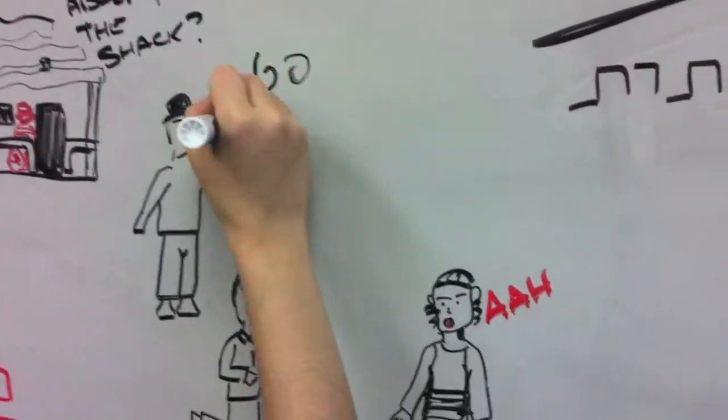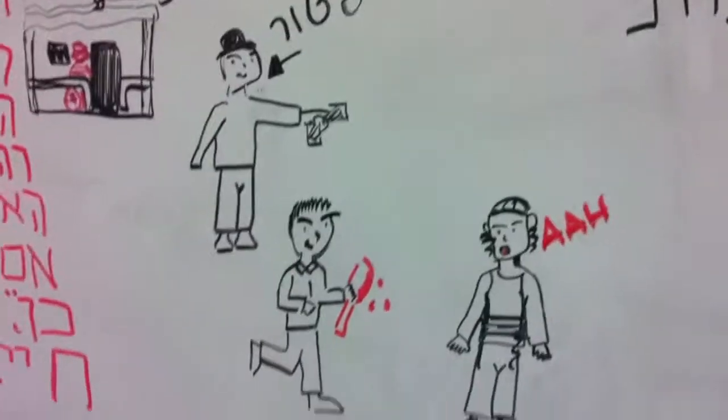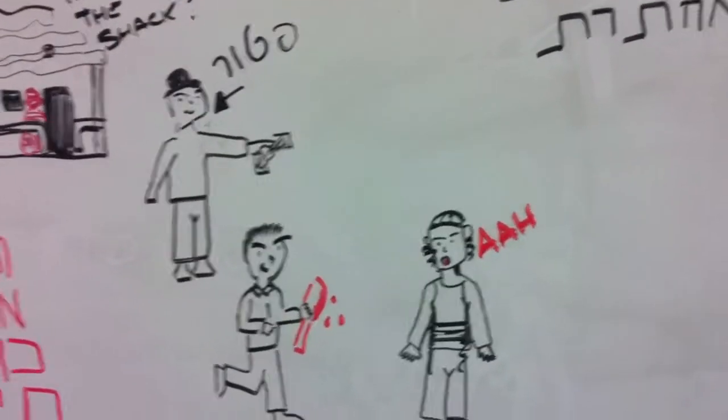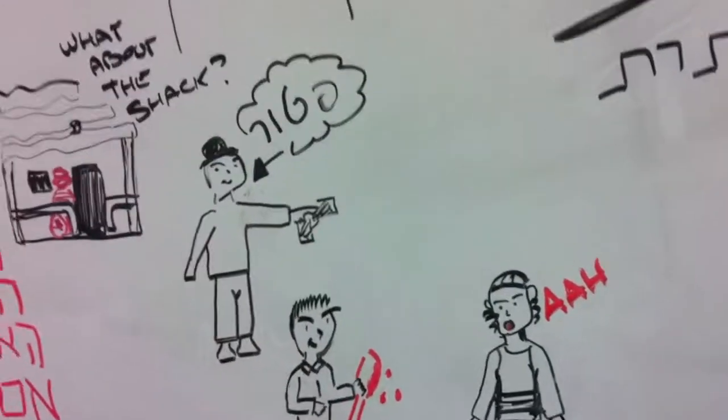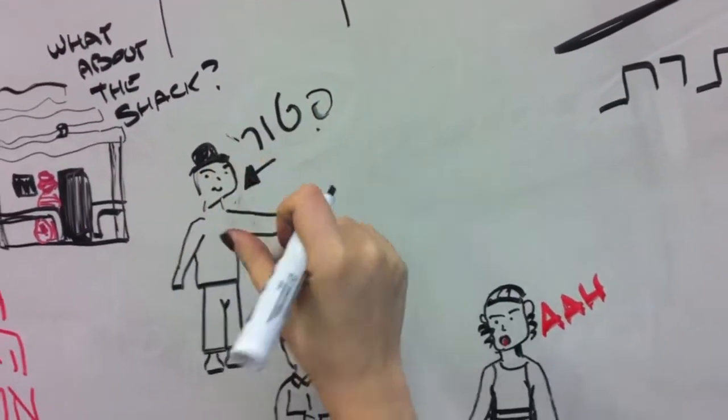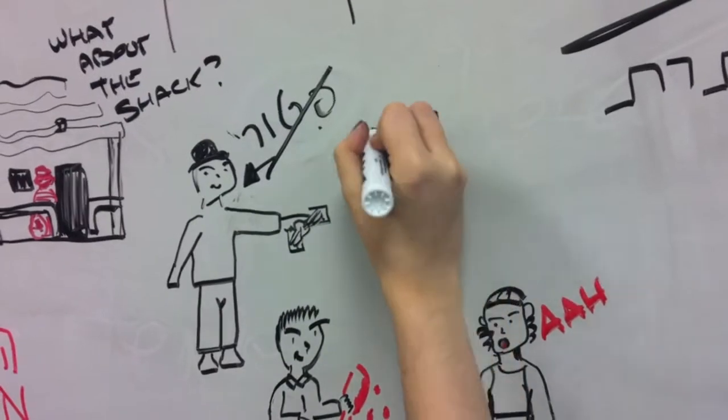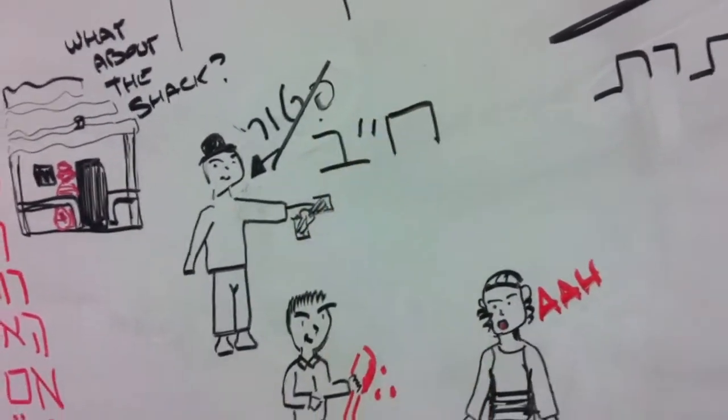If the chaser says, I know that's the punishment, the person warning him is Pator from killing him. Aminat Kena Ni Yoseh Chayev - if the Rodef says, on that condition I'm doing it anyway, the guy warning him is Chayev to kill him.